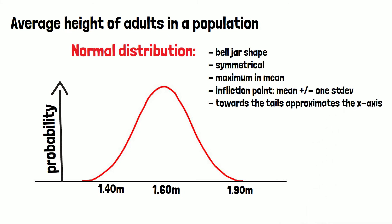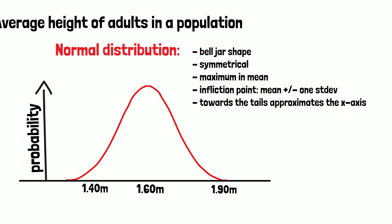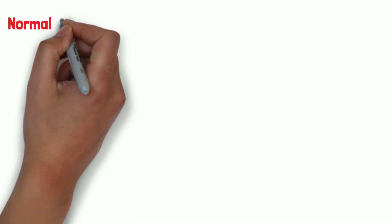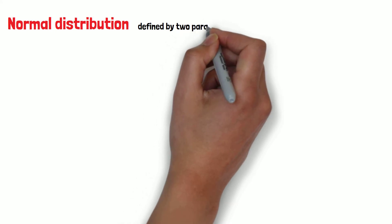Towards infinity and minus infinity, so towards the tails, it approximates the x-axis. The normal distribution is defined by two parameters, the mean and the variance.